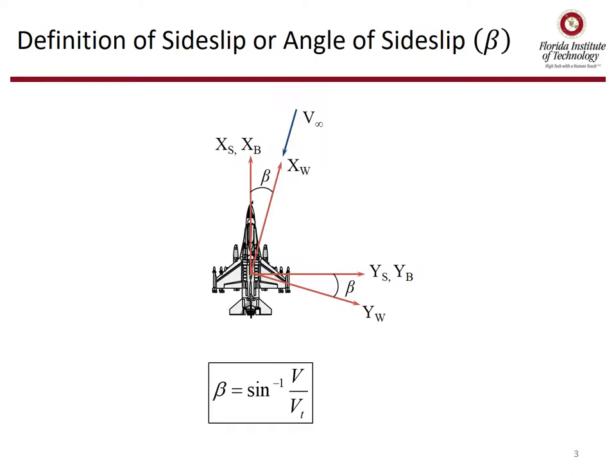Recall the definition of sideslip or angle of sideslip beta. From the axis systems, we had body axis, stability axis, and wind axis. We had to go all the way to the stability axis to get beta. Positive beta was defined as wind in the right ear, and positive beta is shown on the diagram on the page.